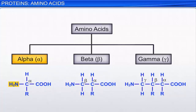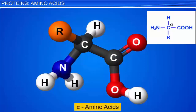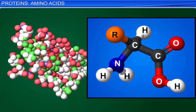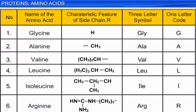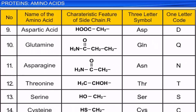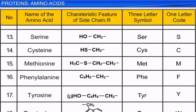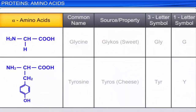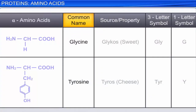In alpha amino acids, the amino group is present on the alpha carbon atom. Similarly, in beta and gamma amino acids, the amino group is present on the beta and gamma carbon atom respectively. Alpha amino acids are the building blocks of proteins. Only alpha amino acids are found in naturally occurring proteins. There are 20-odd alpha amino acids. In nature, these 20-odd different amino acids combine in different ways to form different protein molecules.